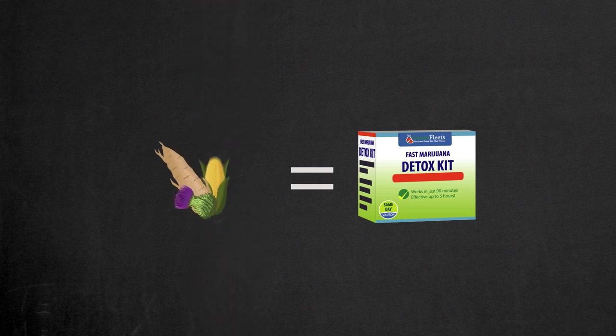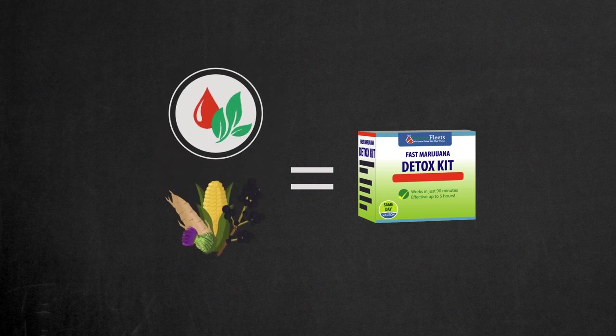Burdock root, corn silk, ligustrum berry, and others. These remove toxins from the blood.